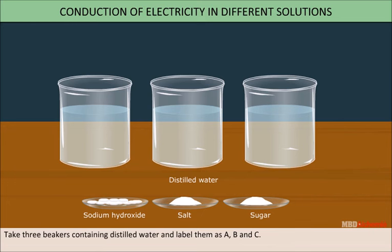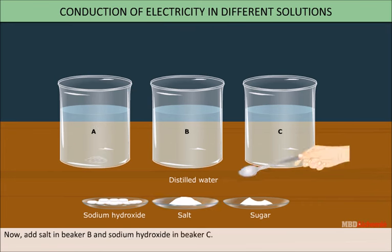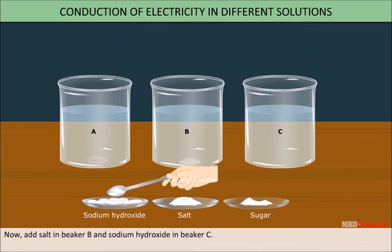Take three beakers containing distilled water and label them as A, B, and C. Add a pinch of sugar in beaker A. Now, add salt in beaker B, and in beaker C, add some sodium hydroxide.